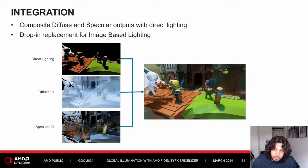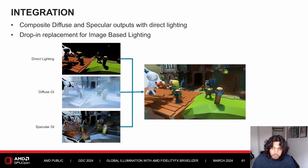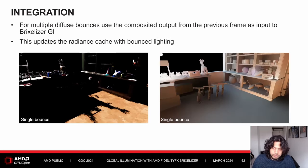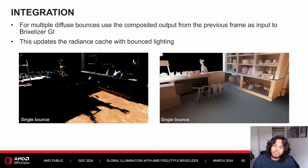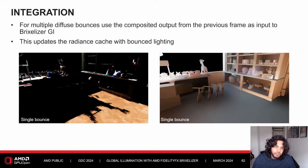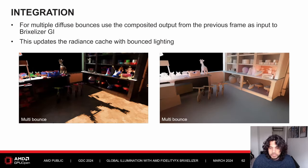After the update, composite the diffuse and specular GI outputs into your direct lighting output the same way you would with image-based lighting — usually by plugging it into Epic's split-sum approximation. Using just the direct lighting from the previous frame gives you one-bounce diffuse GI. However, if you want multi-bounce GI, you can create a feedback loop by using the composited output from the previous frame as input to Brixelizer GI. Here you can see the radiance cache and diffuse GI output with a single bounce versus multi-bounce — the difference is subtle but helps in scenes that are indirectly lit.